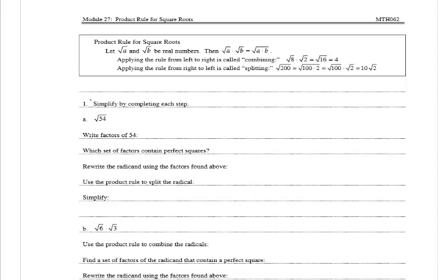In number one, it wants us to simplify by completing each step. In part a, we have the square root of 54 and we want to write factors of 54. Factors of 54 could be 1 and 54, 2 and 27, 3 and 18, and 6 and 9. The next direction says write the set of factors containing perfect squares. The only perfect square across those factors is 9, so 6 and 9 is the set of factors that contains a perfect square.